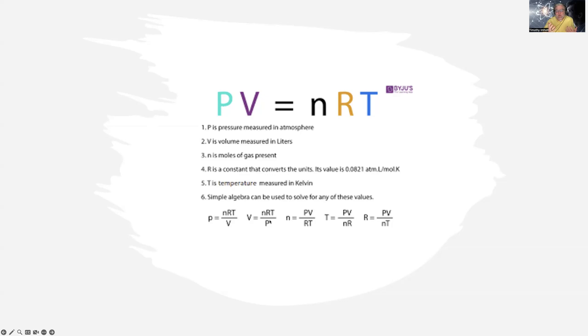Times R, which is just a constant that equals the value shown there—don't worry about the constant—times temperature. So what you really see is if pressure goes up and volume stays the same, you only have a couple things you can mess around with.